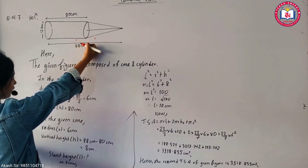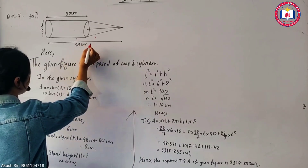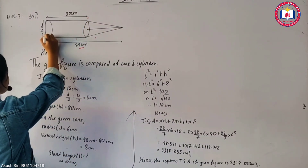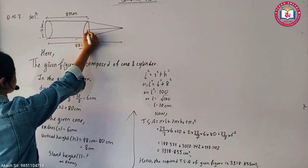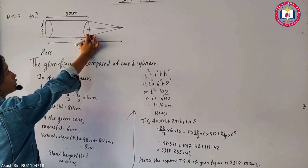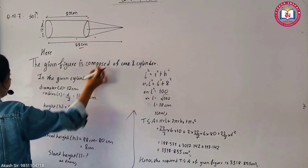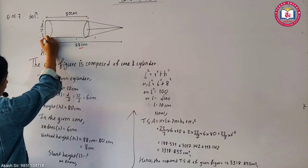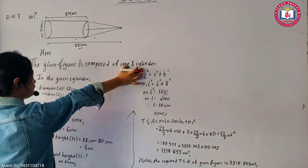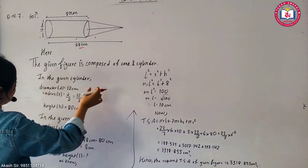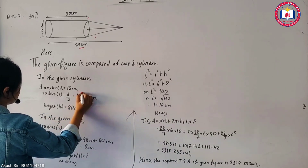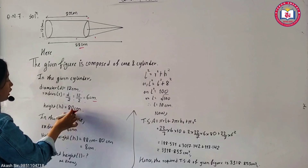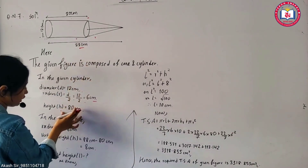This figure is a cylinder. The combined figure total height is 18 cm and this cylinder height is 18 cm. This cylinder has the same diameter, and the diameter is 12 cm.